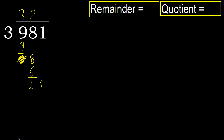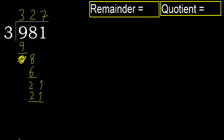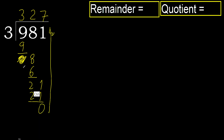Next, bring down to get 21. 3 multiplied by 8 is 24, which is greater. Multiply by 7: 21 is not greater. Subtract. There is no next number, therefore finish it.